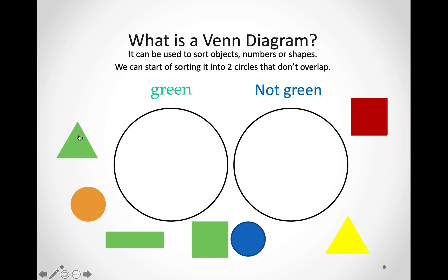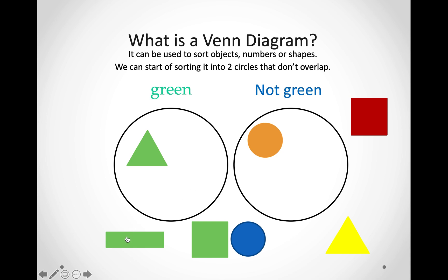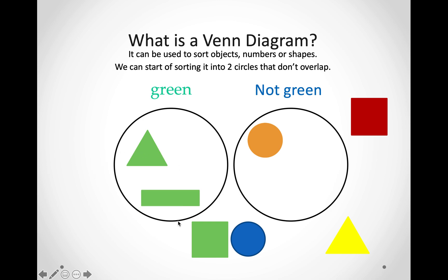Let's begin. Is this triangle green? Yes, it is. How about the circle? Is it green? No, it is not green. So, we will put it in the not green circle. Is this rectangle green? Yes, it is. So, we are going to put it in the green circle.